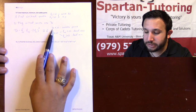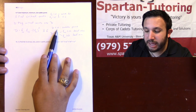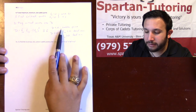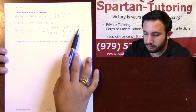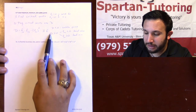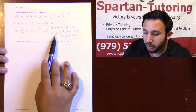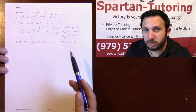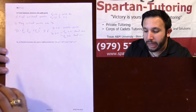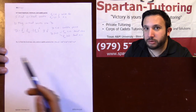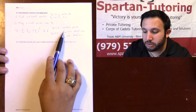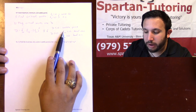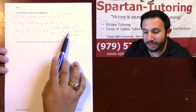D is equal to fxx times fyy minus fxy squared. If D is negative, then what you have is a saddle point. If D is positive, then you're either going to have a local max or a min, and to determine which, you need to look at your second derivative fxx.